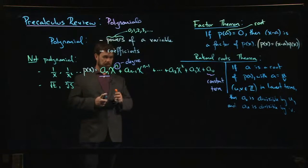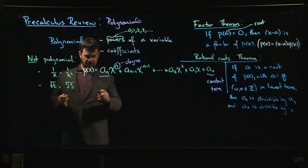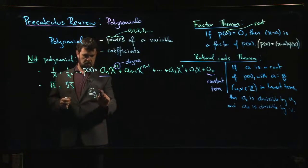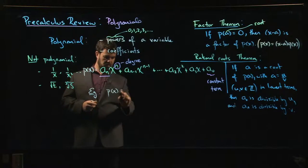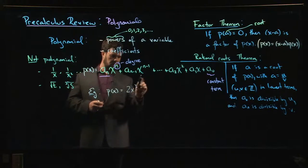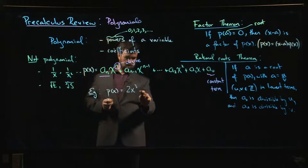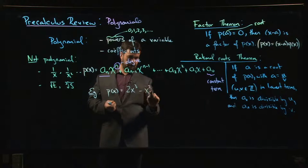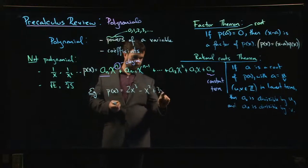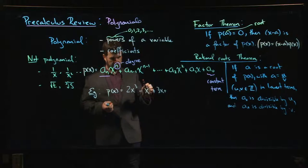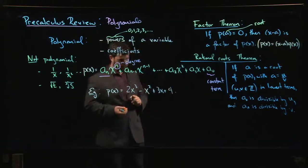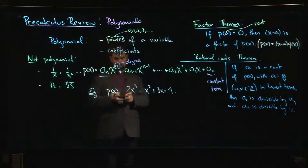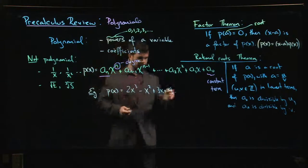So let's try a quick example. If I just write down a polynomial at random, there's always a chance that it doesn't have any rational roots at all. Let's go with this example. So let's say 2x^3 - x^2 + 3x + 4.